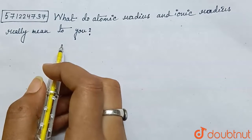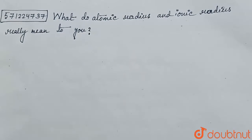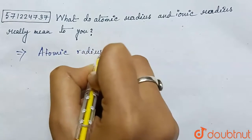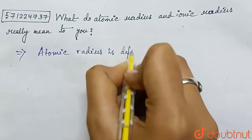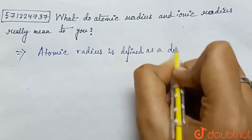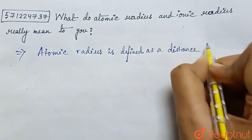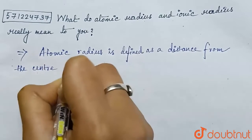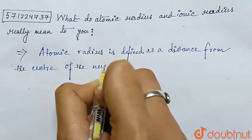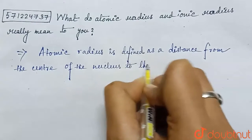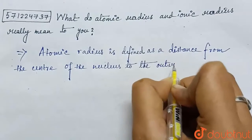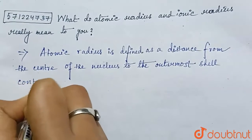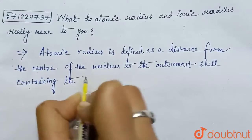So what is atomic radius and ionic radius — we have to write. First, atomic radius: atomic radius is defined as the distance from the center of the nucleus to the outermost shell containing the electrons.